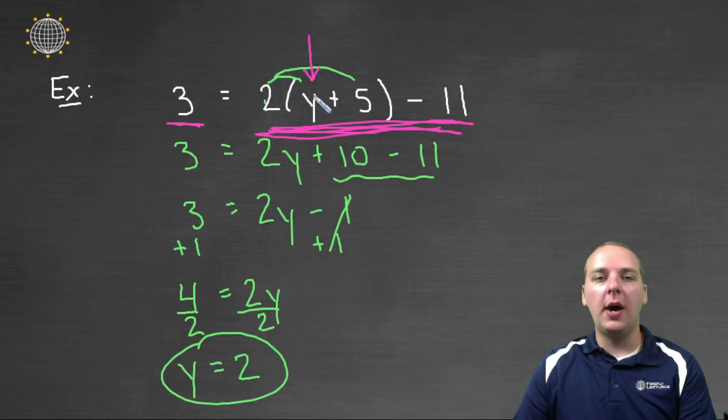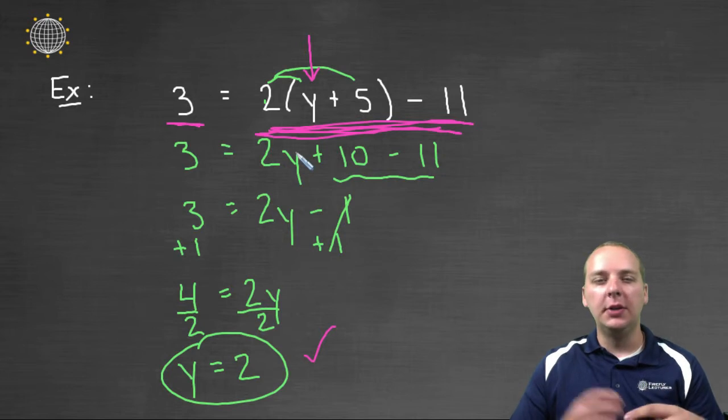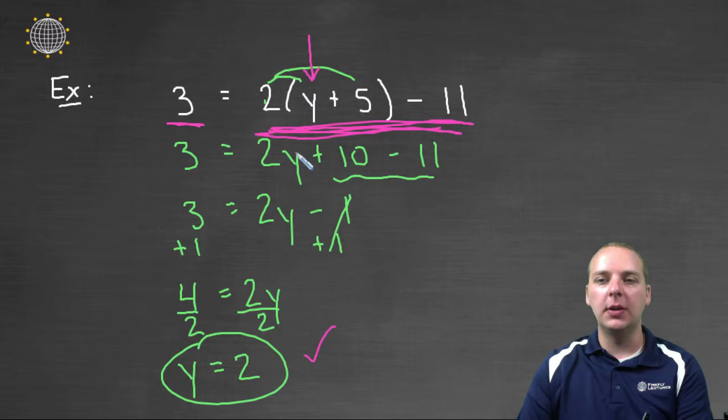Let's take 2 for y and try plugging it back in the original. 2 plus 5 makes 7, 7 times 2 makes 14, and 14 minus 11 really is 3. So I know 100% that this is the right solution. If I did not get equality here when you plug in for y, you'd have to check your algebra, make sure you combine the right terms, and you add your positives and negatives correct, and that sort of thing.